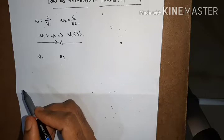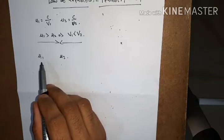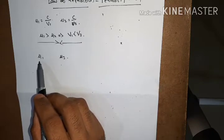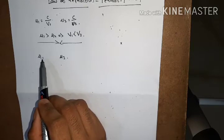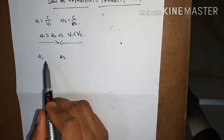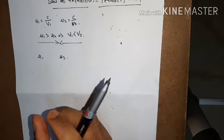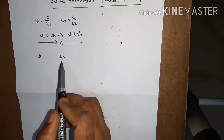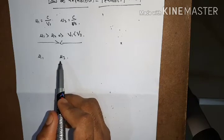If the value of refractive index mu2 is greater than mu1, and the light ray originates from the medium having refractive index mu1 going to the second medium having refractive index mu2, then the light ray will choose a path in which it approaches the normal at the point of refraction. If mu2 has a lesser value, then the light ray in the second medium will go away from the normal at the point of refraction.